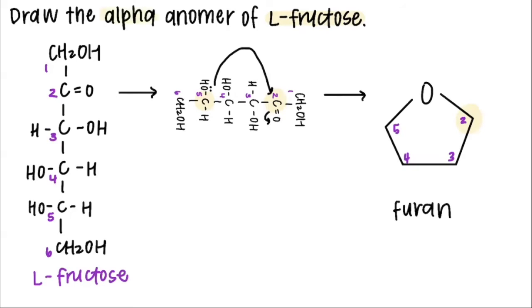So in this case, it's looking for the alpha anomer. So the hydroxyl on the second carbon is going to be pointing down.